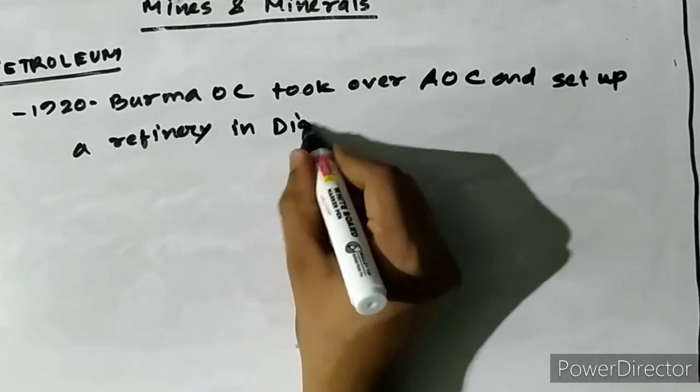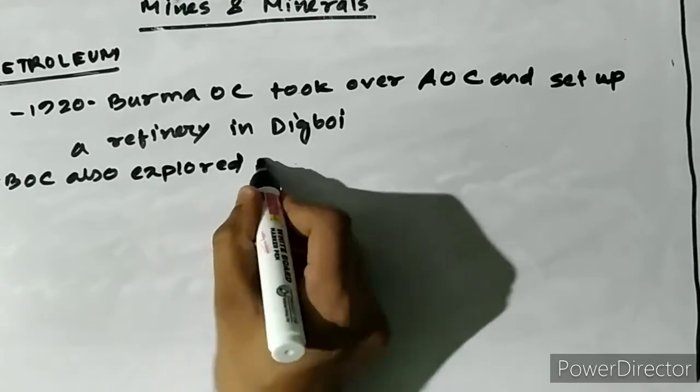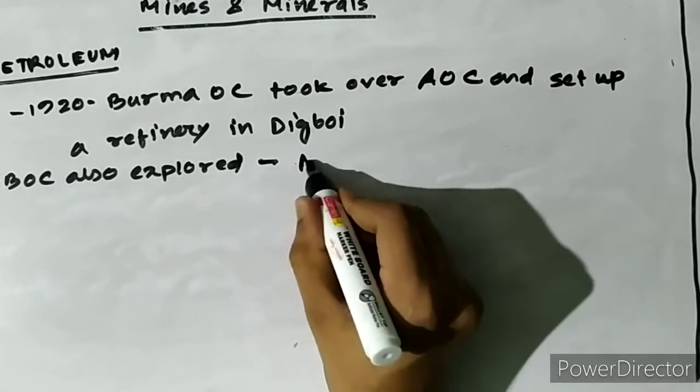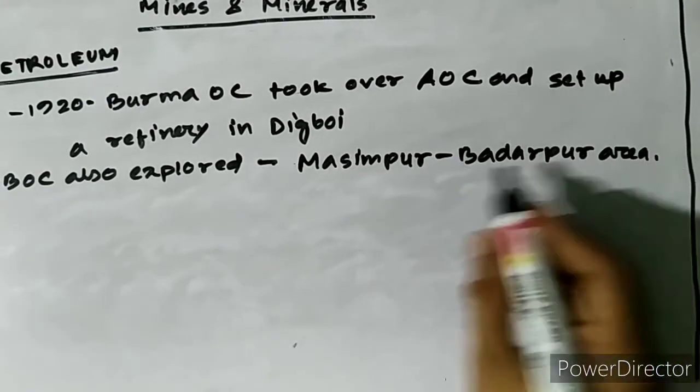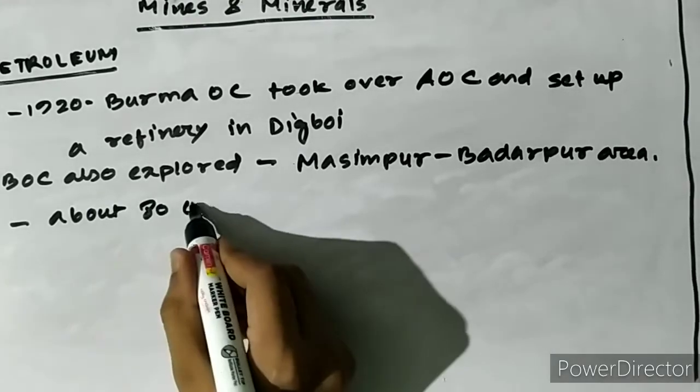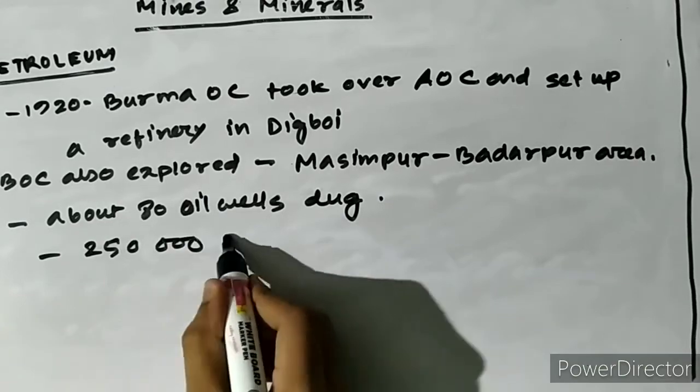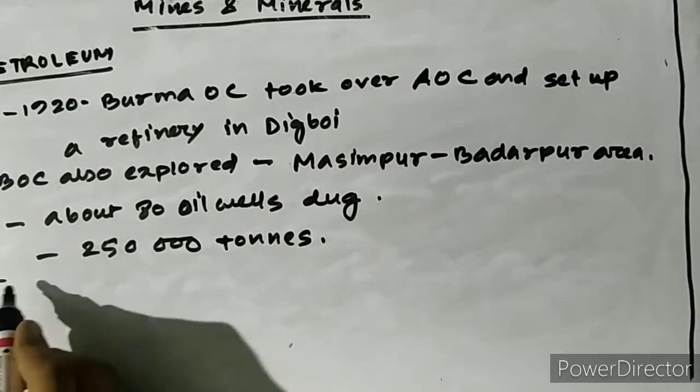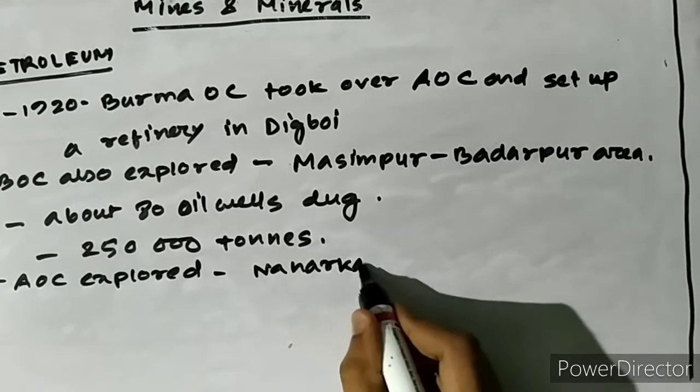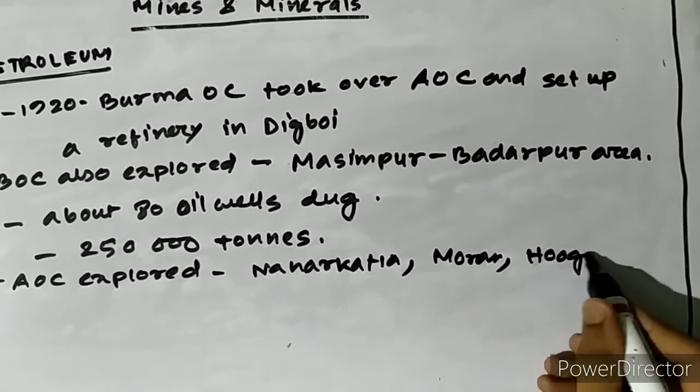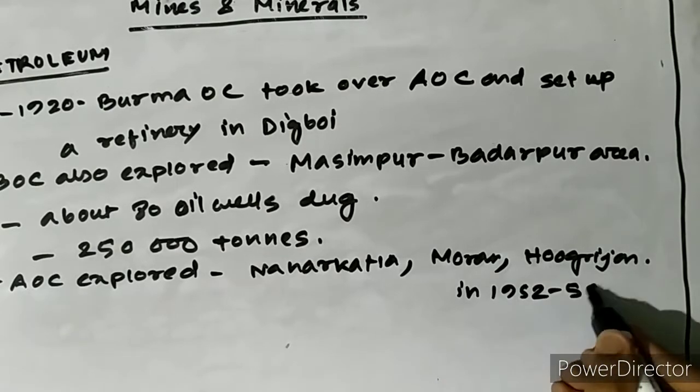During 1890 to 1899, the Assam Railway and Trade Company drilled about 14 oil wells and found them productive in crude oil, thus establishing a new company named Assam Oil Company which was constituted in 1899. In 1920, the Burma Oil Company took over the Assam Oil Company and set up a new refinery at Digboi in 1921. The Burma Oil Company explored oil in the Barak Valley up to two decades from 1950 and found oil and natural gas in Masimpur-Badarpur area. In this area, as many as 80 wells were dug and it produced about 250,000 tons of oil.